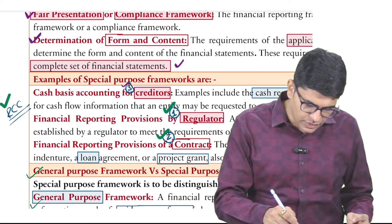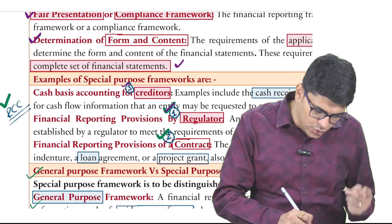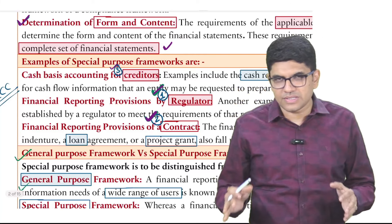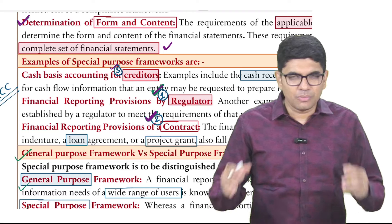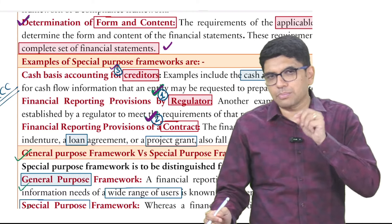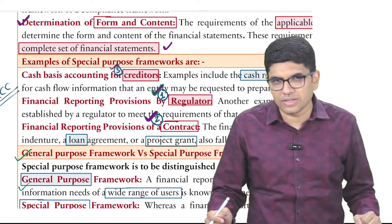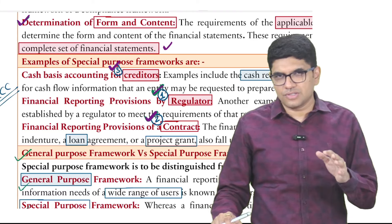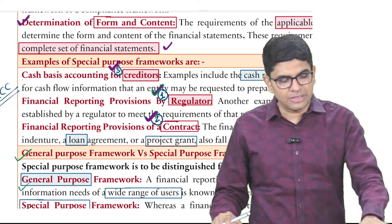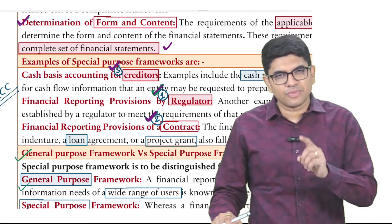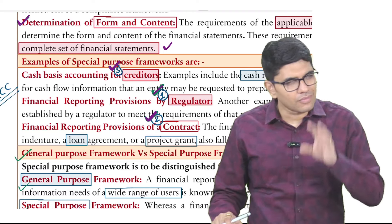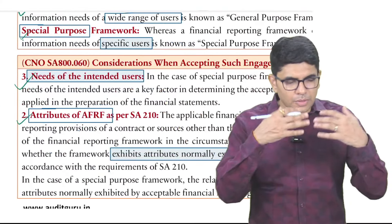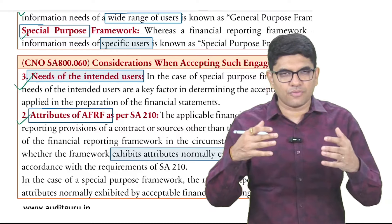Another example: suppose there is a joint venture contract between two parties, and the last two pages specify the format of financial statements and how they will be prepared — useful only for those two parties. That contract-based framework is a special purpose framework. Similarly, creditors may say to prepare financial statements on cash basis, assets on realizable value, liabilities on payable value — that will again be a special purpose framework. So now we know what is general purpose and what is special purpose framework and financial statements.